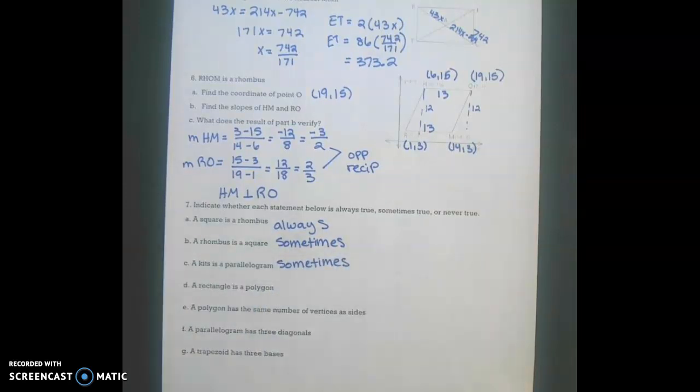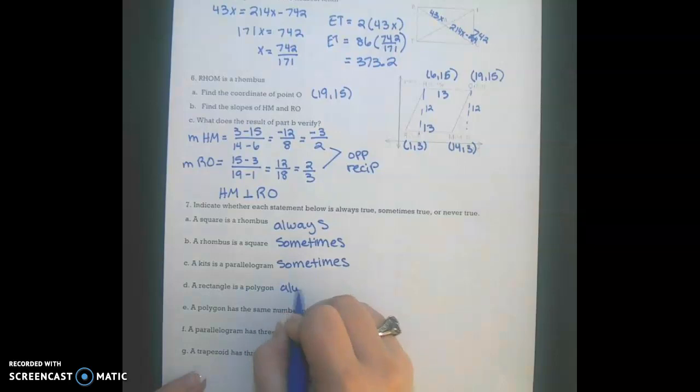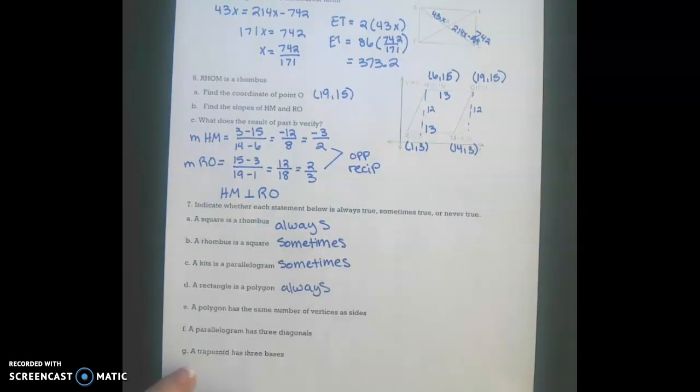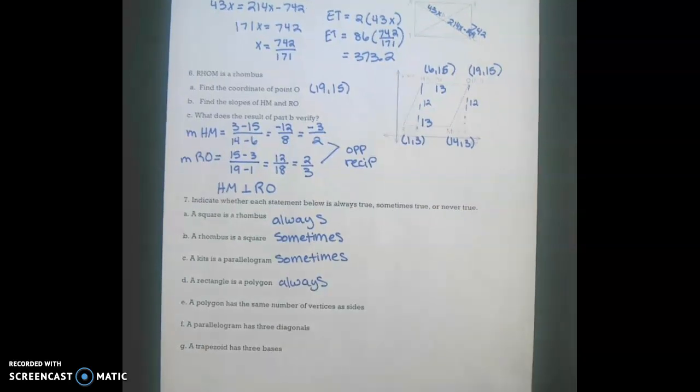A rectangle is a polygon. That is always true. It meets all our properties of a polygon. A polygon has the same number of vertices as sides. This is also always true.